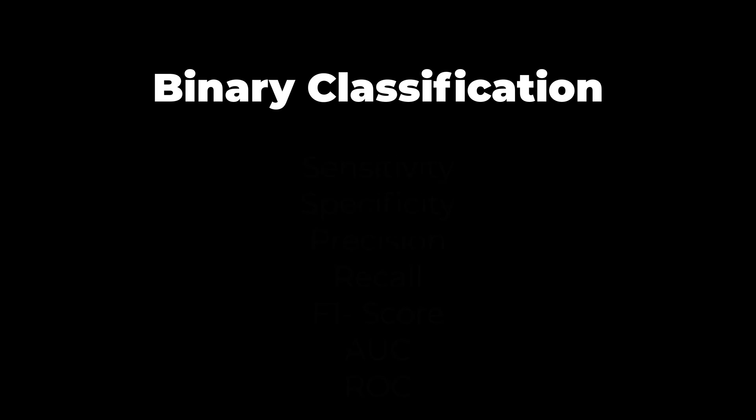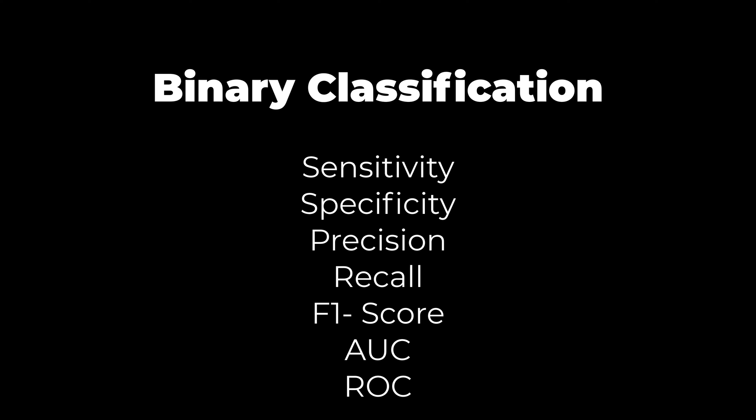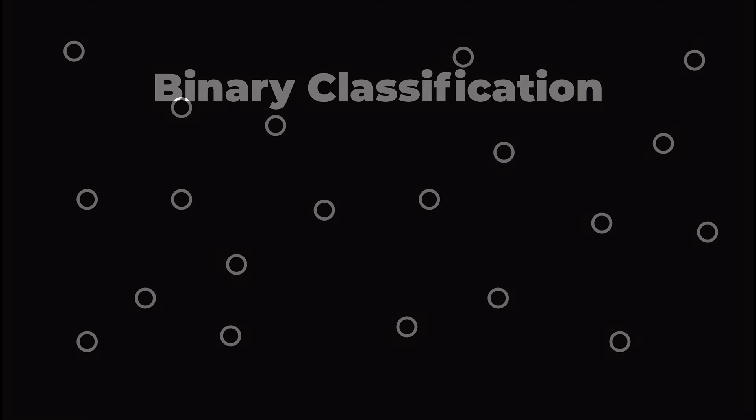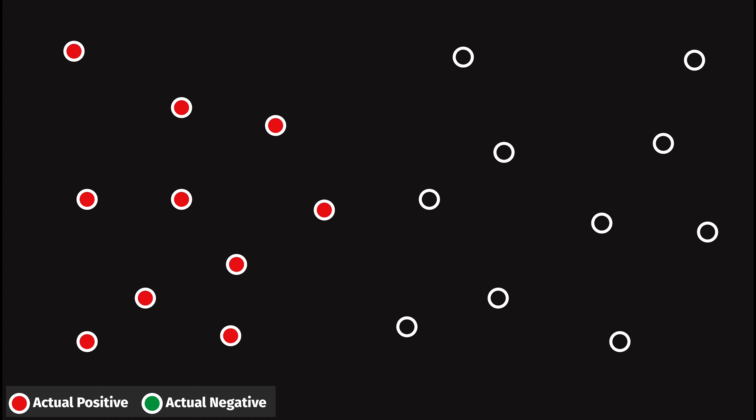Binary classification models have a host of terminology to describe their effectiveness. Consider a simple binary dataset of many items, each of which falls into one of two classes. You can always think of these two classes as positive and negative. We label all of the positive results as red and all of the negative results as green. This labeling is the reality of the underlying data before models make predictions.